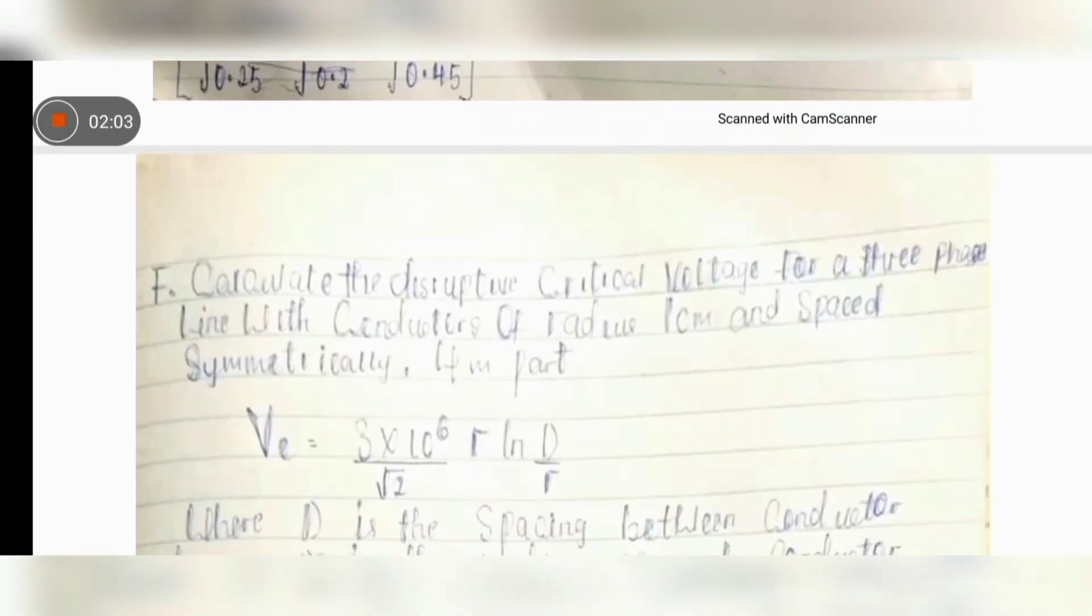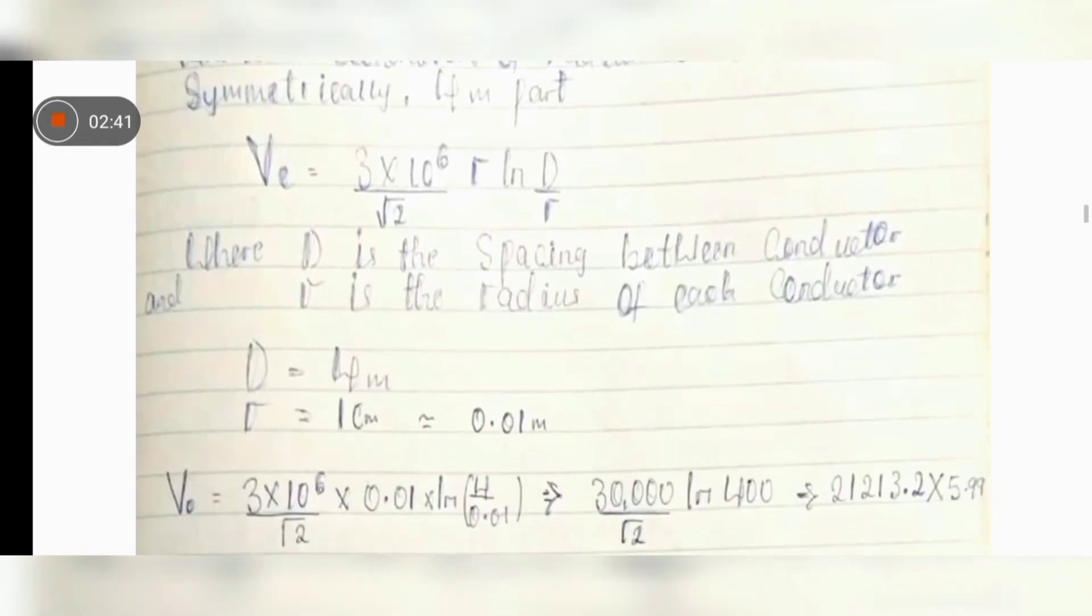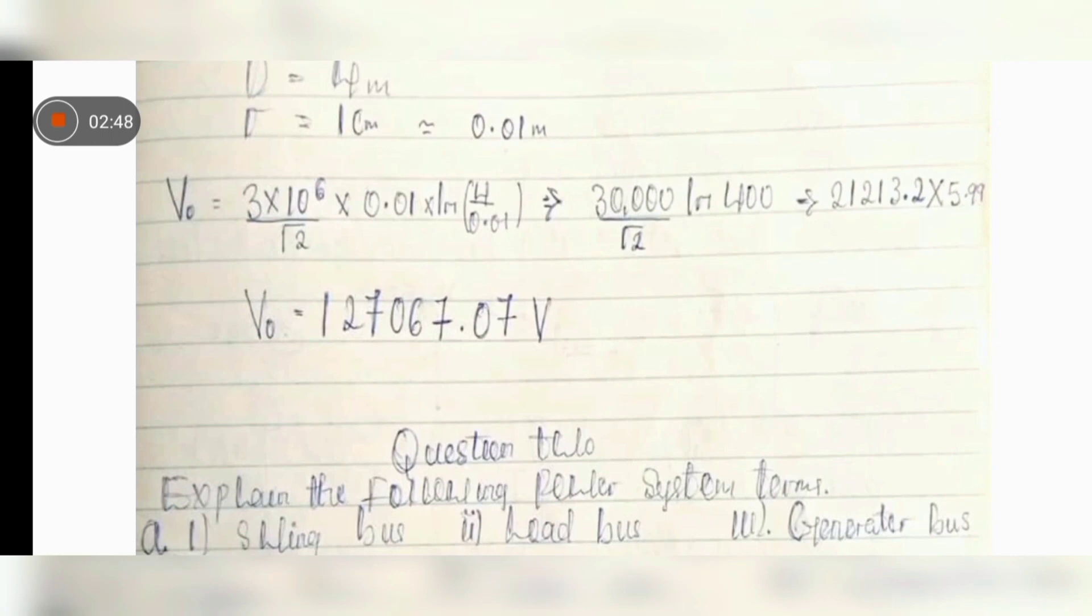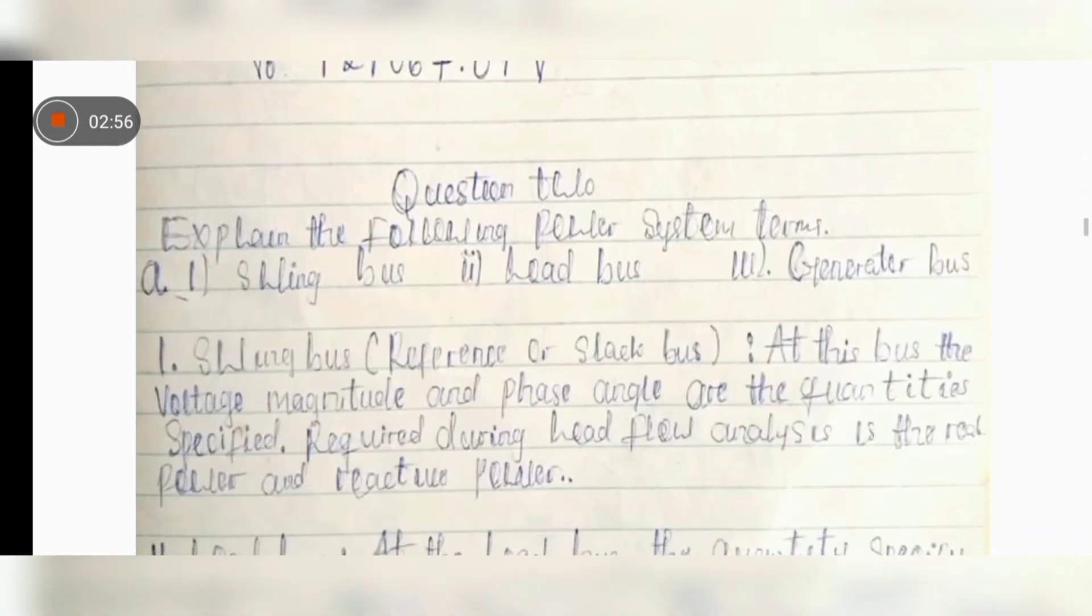Calculate the disruptive critical voltage for a three-phase line with conductors of radius one centimeter and spaced symmetrically four meters apart. Mind you, the four meters apart there is the distance space. The radius given to us is one centimeter. We have to convert it to meters by dividing that one by hundred. We have our meter for that. And the formula for finding critical voltage is equals to 3 times 10 raised power 6 over root 2, radius, ln of d over r, that is our diameter over the radius. So if you can input the values, you should have your final answer as 127,067.07 voltage as your final answer. If you have that, put that in the comments below.